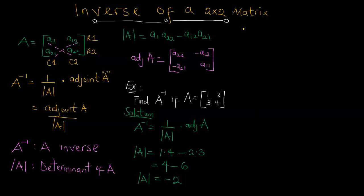Then we compute the adjoint of A. We know A is [[1, 2], [3, 4]]. The elements on the leading diagonal are 1 and 4 — we flip them to get 4 and 1. Then we multiply the elements on the other diagonal by negative 1: 2 times negative 1 gives negative 2, and 3 times negative 1 gives negative 3. So the adjoint of A is [[4, -2], [-3, 1]].